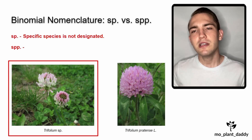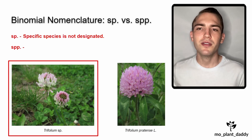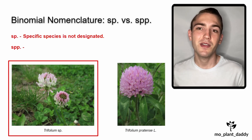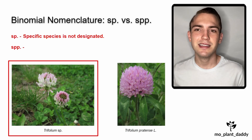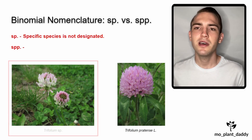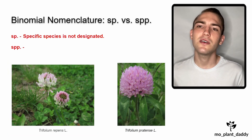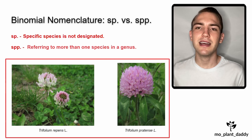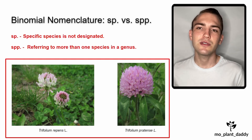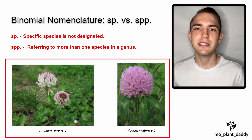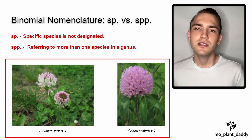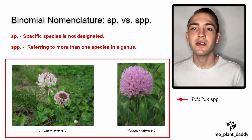Now, if we wanted to refer to both Trifolium repens and Trifolium pretense at the same time without using their full names, we could do so by using the SPP ending. This ending is used when referring to more than one species in a genus, so we could just say Trifolium spp.